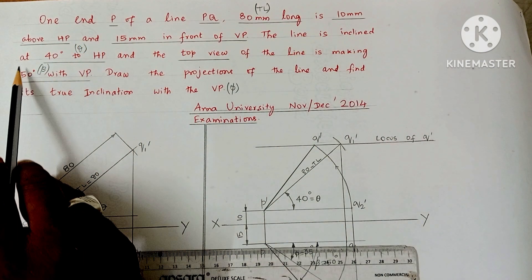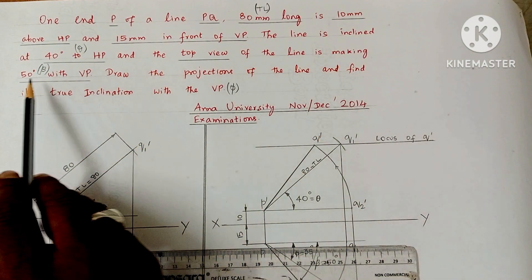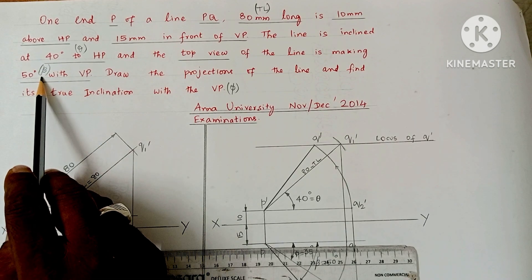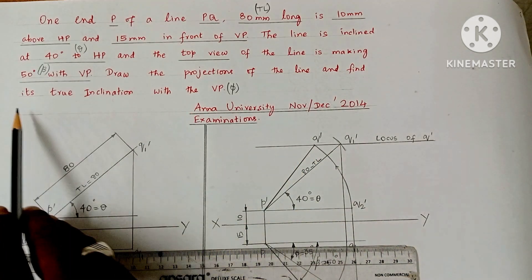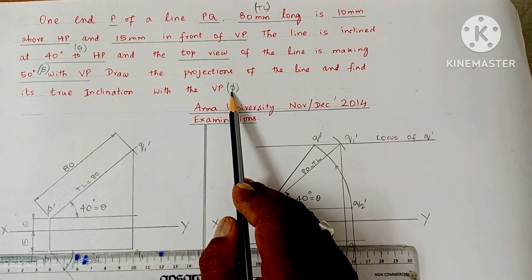The line is inclined at 40 degrees to HP (theta) and the top view of the line makes 50 degrees with VP (denoted as beta). Draw the projections of the line and find its true inclination with the VP. They ask you to find phi, the true inclination with VP.